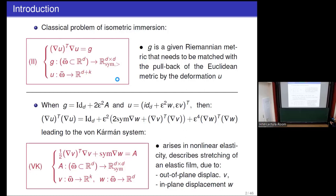If we make this ansatz and compute the gradient U transpose gradient U, it turns out very naturally to be a perturbation of identity of order epsilon squared. The leading-order term has the form: twice the symmetrized gradient of W, plus the expression gradient V transpose gradient V — similar to the original system but now for the K-dimensional displacement. This leads to the Von Kármán system of PDEs.